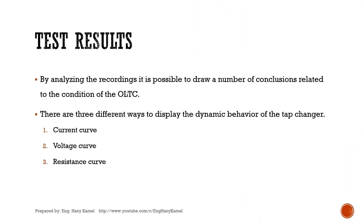By analyzing the recordings, it is possible to draw a number of conclusions related to the condition of the OLTC. There are 3 different ways to display the dynamic behavior of the tap changer: the current curve, the voltage curve, and the resistance curve.